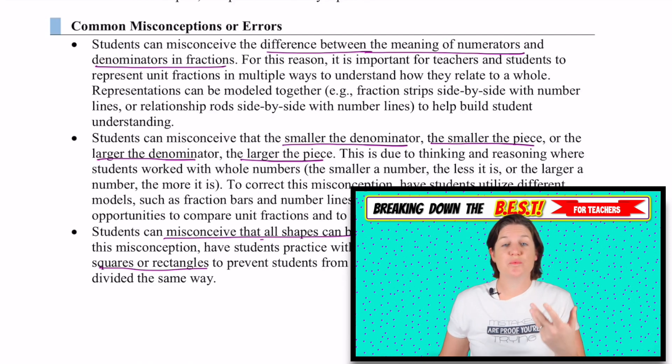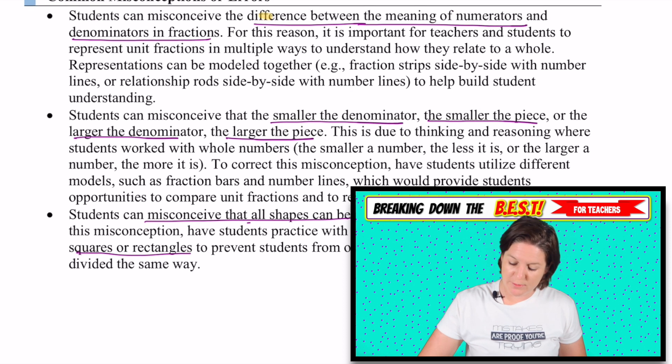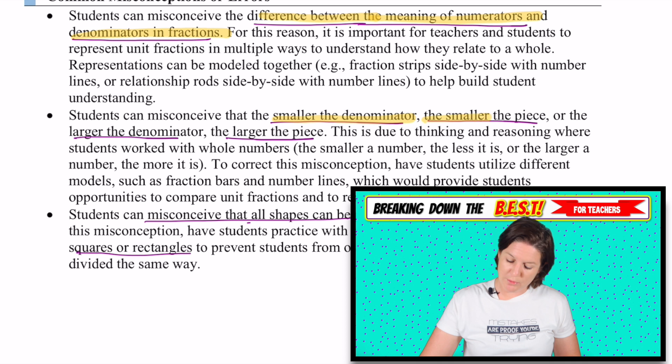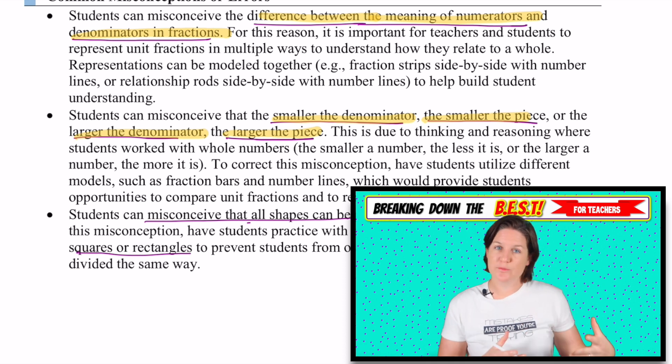Now even though students might come to you with some background knowledge on fractions, fractions in general do present a lot of misconceptions. One of the things is knowing the difference between the numerator, meaning of the numerators, and the denominators in fractions. Students might misconceive that the smaller the denominator, the smaller the piece, or the larger the denominator, the larger the piece. And this will be a wonderful way for them to see that one third is way bigger than one tenth. And you have to think about it from their perspective that when they've been comparing numbers, three is less than 12. But when we're seeing it as part of a whole, cutting it into three equal parts rather than 12 equal parts, it kind of changes the way that we see numbers.